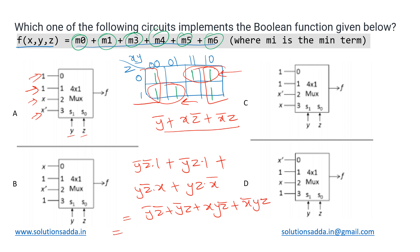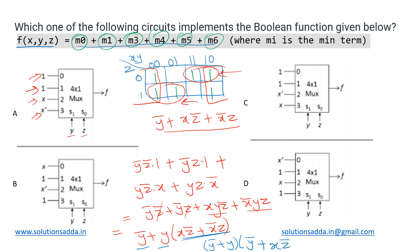Simplifying: y̅z̅ + y̅z + xyz̅ + x̅yz. We combine the first two terms — factoring out y̅, the z̅ and z add to 1 — giving y̅. From the last two terms we factor out y, giving y(xz̅ + x̅z). Applying the distributive property with y̅ + y = 1, the full expression becomes y̅ + xz̅ + x̅z, which is exactly what we wanted.